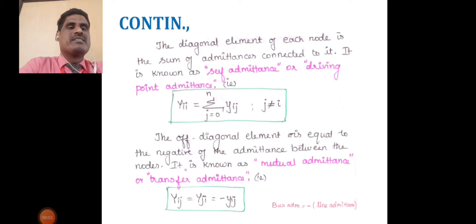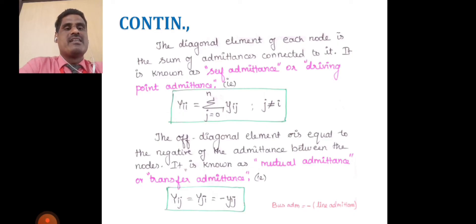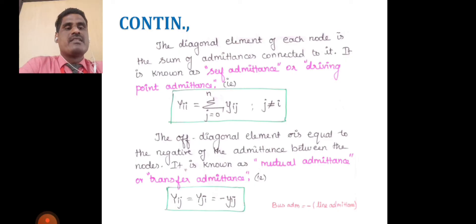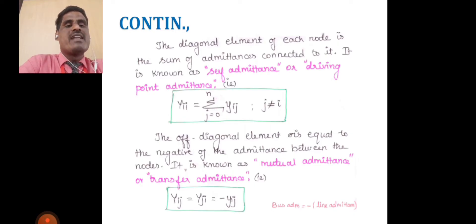In the Y_bus admittance matrix, the diagonal element of each node is the sum of admittances connected to it. It is known as self-admittance or driving point admittance: y_ii = summation of y_ij for j = 0 to n. For mutual admittance, the off-diagonal element is equal to the negative of the admittance between the nodes. It is known as mutual admittance or transfer admittance: y_ij = y_ji = −y_ij.